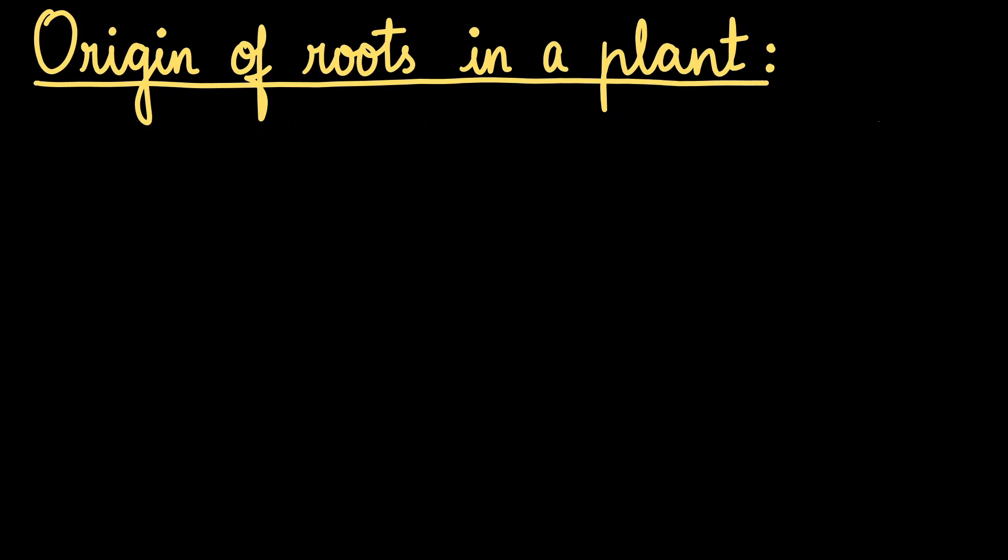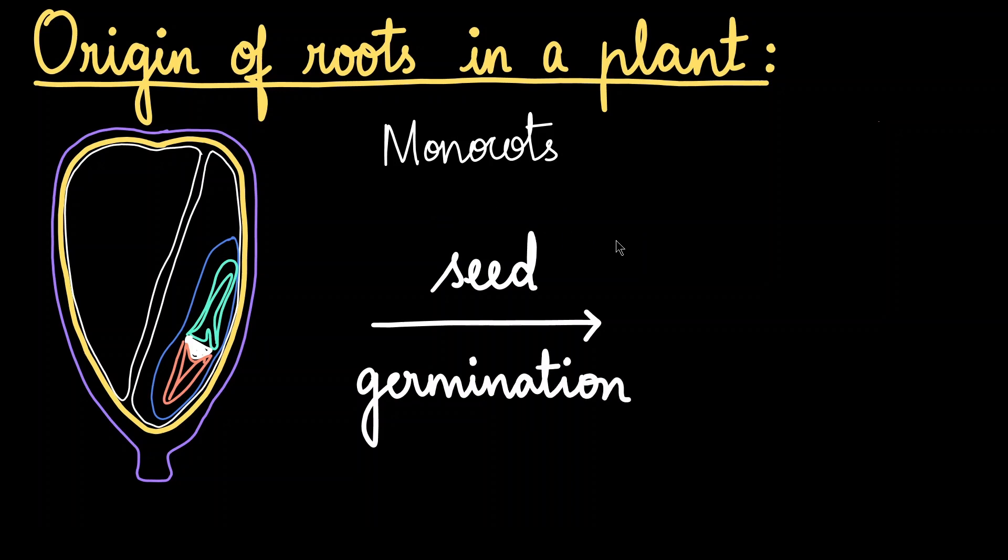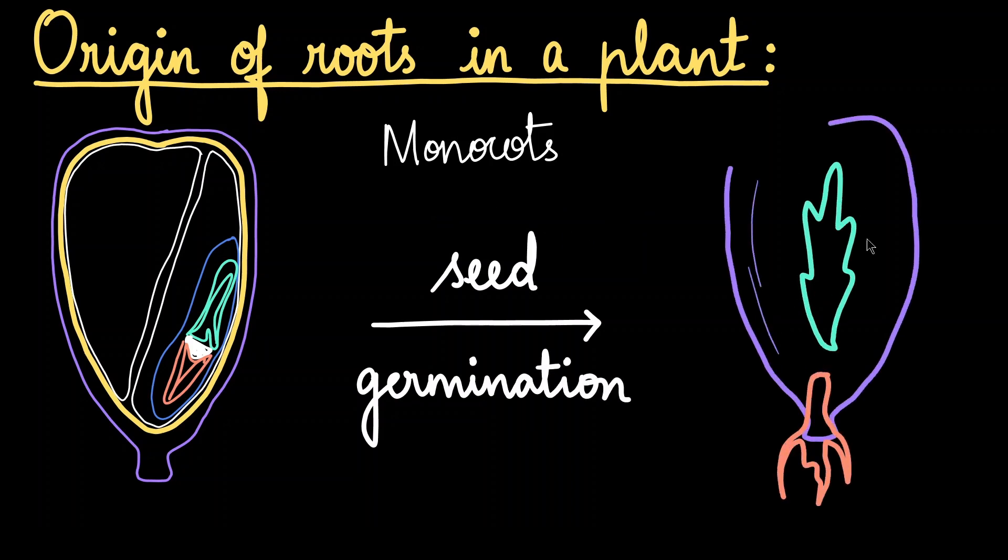What is the origin of the root in a plant? We're going to discuss flowering plants, and we know that flowering plants come from seeds. Let's take the example of a monocot seed. When the conditions are right, monocot seeds germinate and give out these structures. This particular structure at the bottom is called as a radicle. Radicle is special because this is what gives rise to the root when you plant the seed.